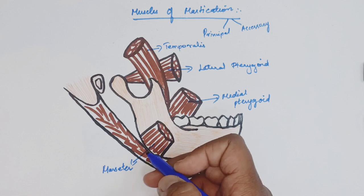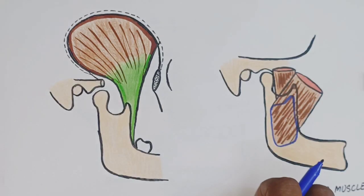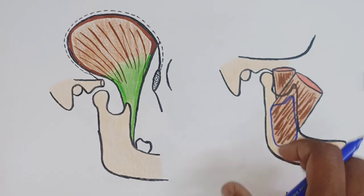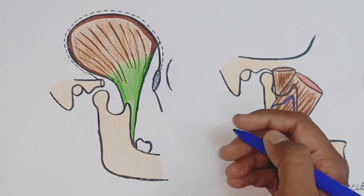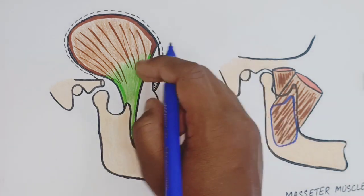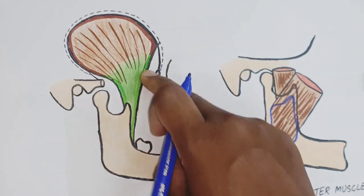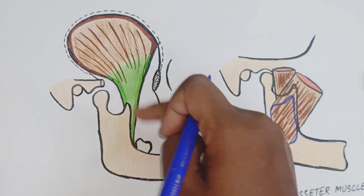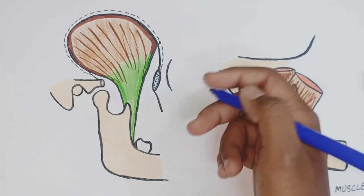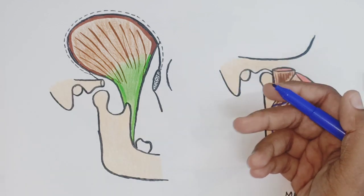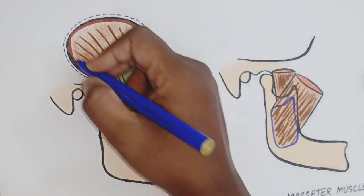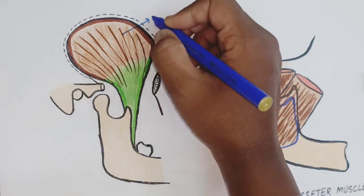These principal muscles are located in and around the infratemporal fossa region. In the infratemporal fossa — on the side of the skull — the zygomatic arch is located. All four principal muscles are inserted into the ramus of the mandible. They are innervated by the mandibular division of the trigeminal nerve, and they are concerned with the movement of the mandible at the temporomandibular joint.